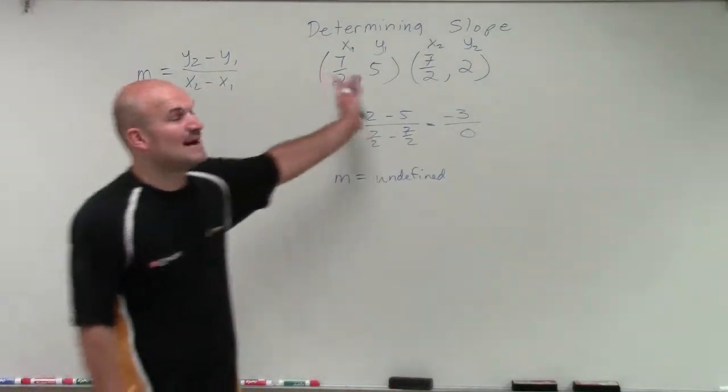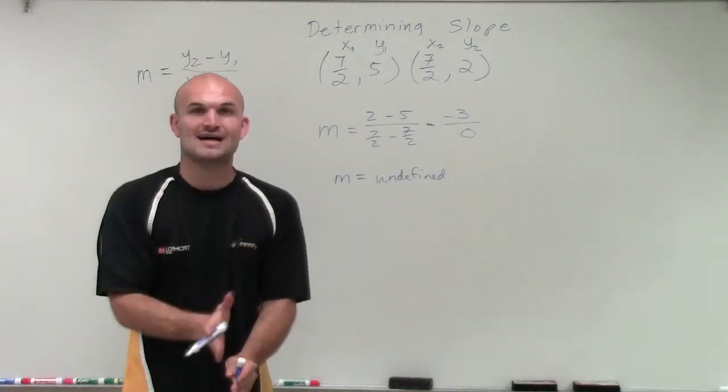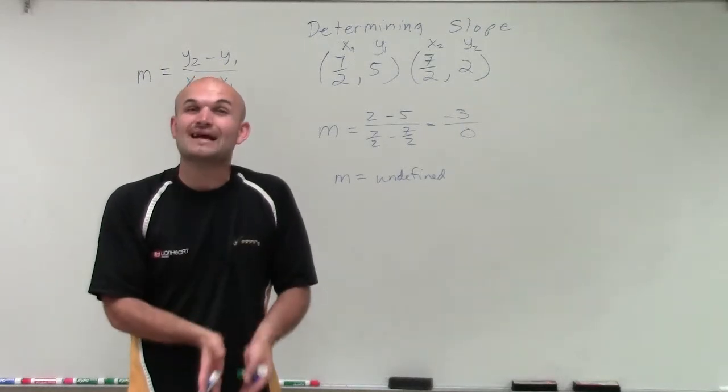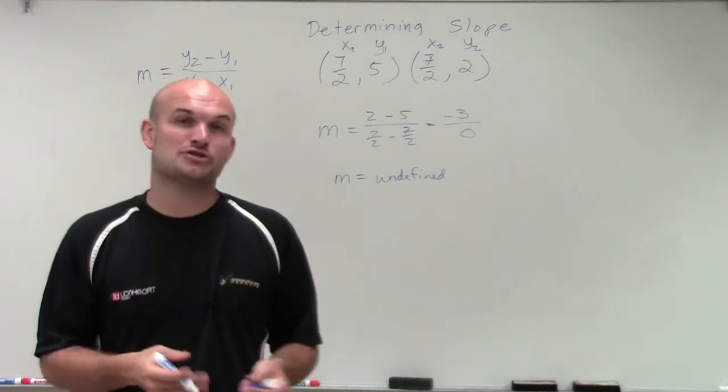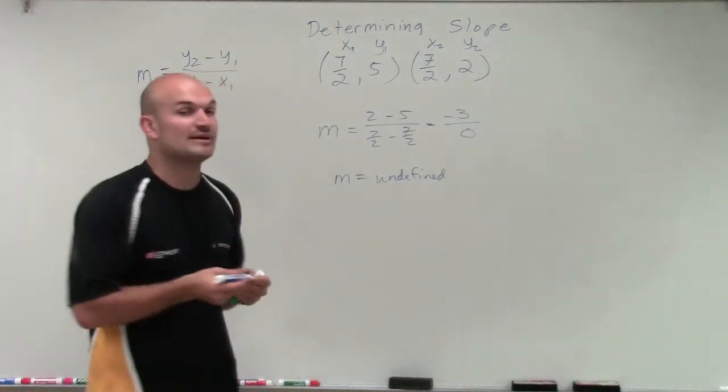So that's very important because my x values are staying the same. So even though I'm changing vertically, I'm not shifting left or right, creating a vertical line. And when we looked at the graph of a vertical line, we were able also to determine that my slope is going to be undefined.